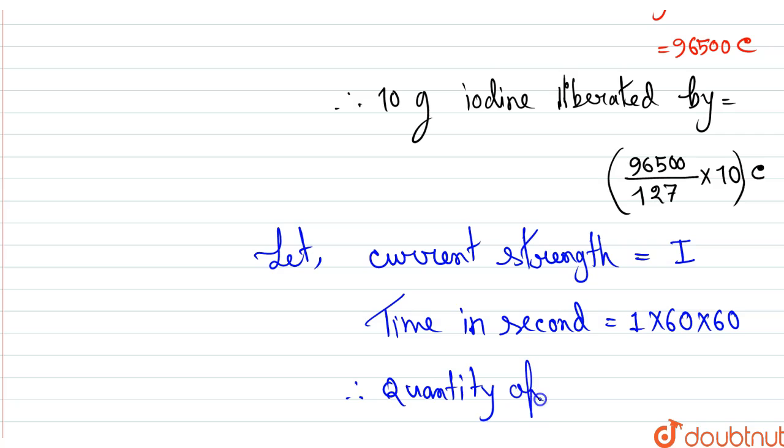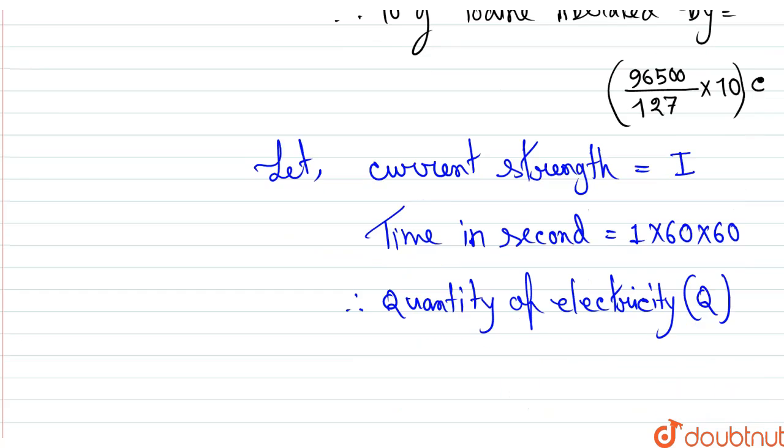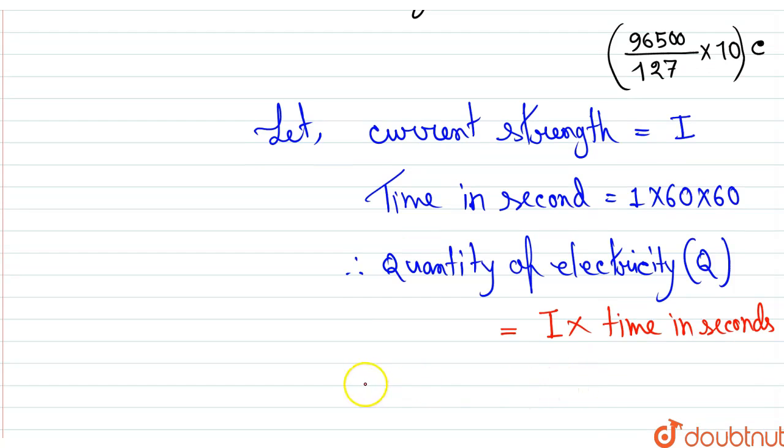Therefore, the quantity of electricity, if we calculate it, which we denoted by Q, equals I × time in seconds. Therefore, the current strength, if we put the required values: